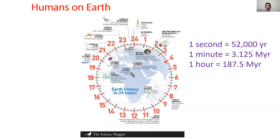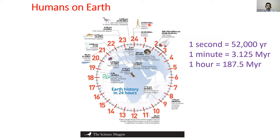On that scale, starting from midnight, the first plant life comes at 6 p.m. Morning came, day came, afternoon came — at 6 p.m. is the first plant life. Dinosaurs appeared at around 9 to 10 p.m., between 21 and 22 hours. If you look at humans, the genus Homo appears at 23:59:12.